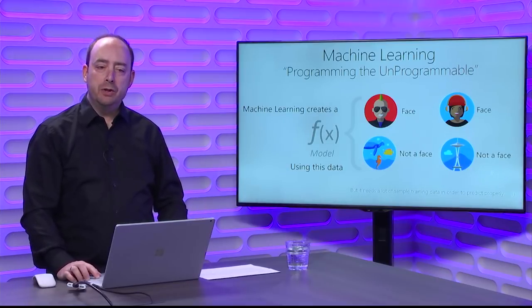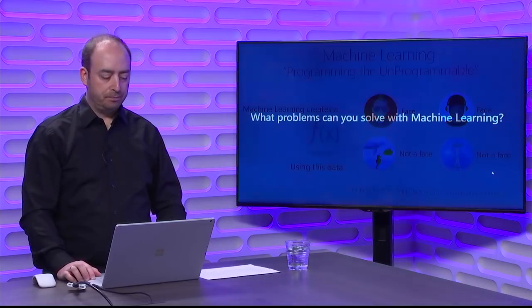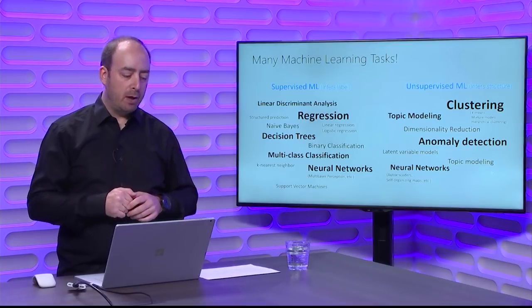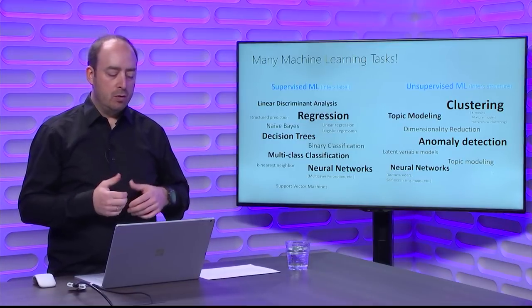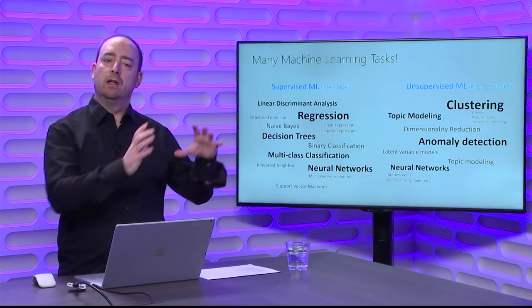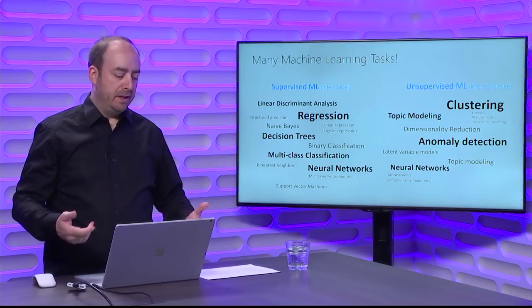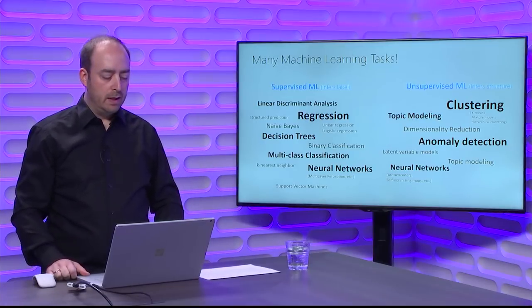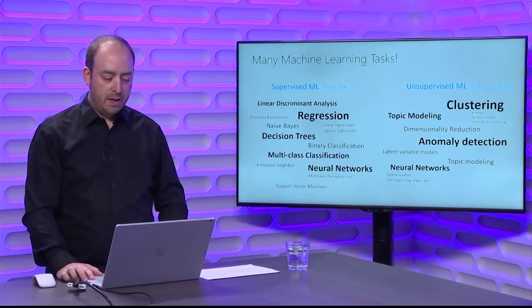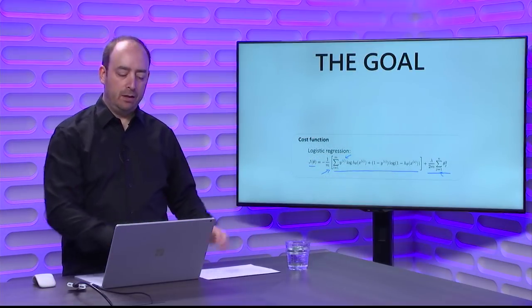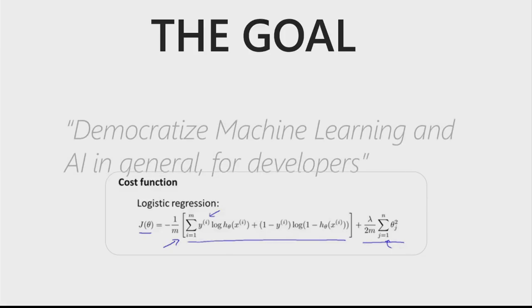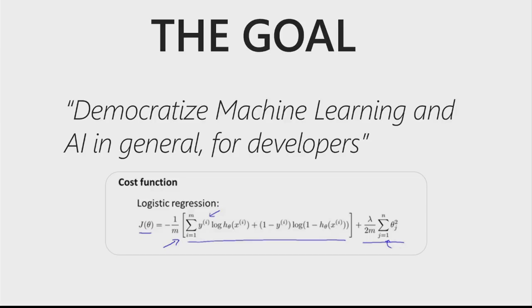Something important is that you need a lot of data to train machine learning models. What problems can you solve with machine learning? There are many problems related to more technical ML tasks — things like regression, clustering, anomaly detection, and so on. What we want to do with Microsoft development technologies is simplify this from a development perspective. Instead of having to learn low-level details about machine learning — like formulas for logistic regression — we just want to democratize AI so it's easy to use for developers.